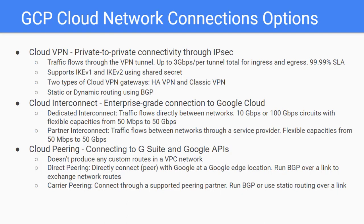If you need private-to-private connectivity, then Cloud VPN is the best choice. Cloud VPN securely connects your peer network to your VPC network through an IPsec VPN connection. Traffic traveling between the two networks is encrypted by one VPN gateway and then decrypted by the other VPN gateway. This protects your data as it travels over the internet.